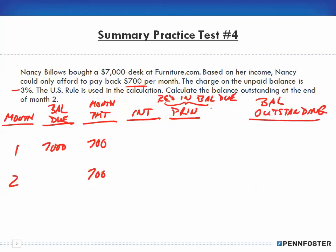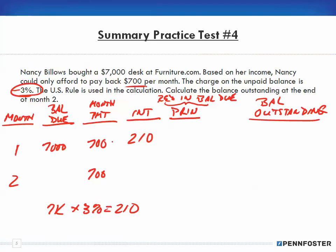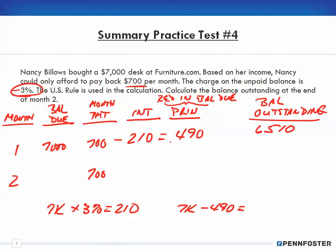For month one, the monthly payment is $700. We calculate the interest: the balance due is $7,000 and the charge on the unpaid balance is three percent, so we multiply $7,000 times 3% and get $210 interest. That comes off the $700 first, giving us a principal reduction of $490. We take $7,000 minus $490 and get a new outstanding balance of $6,510.